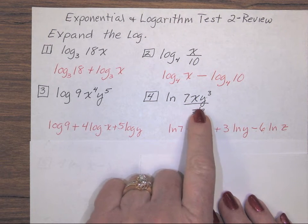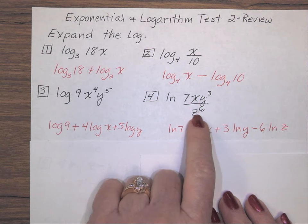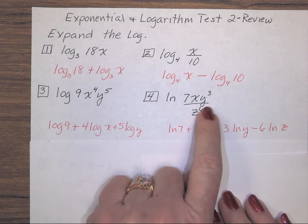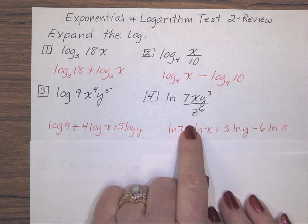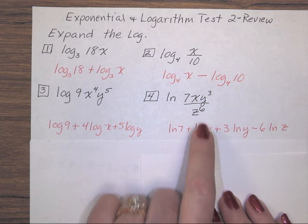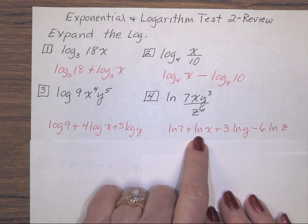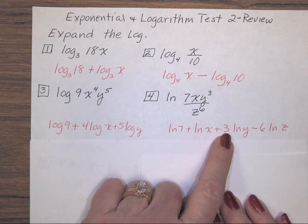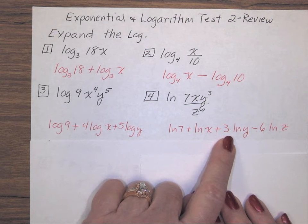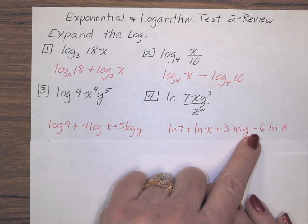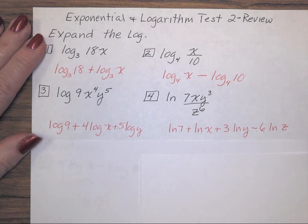For number 4, we have a 7, an x, a y, and a z. Exponents are not separate logs, it's just these bases. So I have the natural log of 7, plus the natural log of x, plus 3 times the natural log of y. z was the only one in the denominator. It's the only term subtracted. I have minus 6, natural log of z.